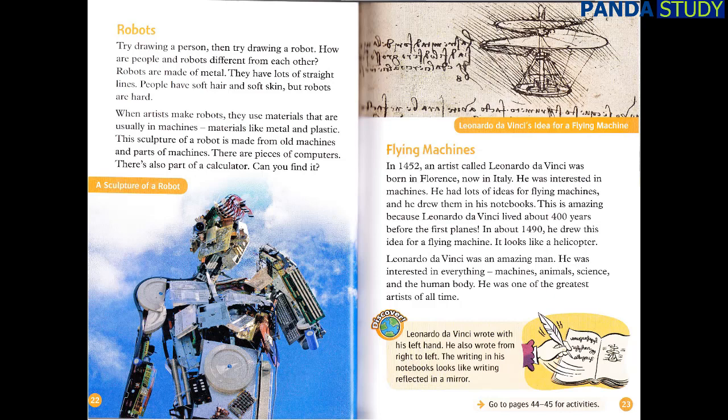Flying Machines. In 1452, an artist called Leonardo da Vinci was born in Florence, now in Italy. He was interested in machines. He had lots of ideas for flying machines, and he drew them in his notebooks. This is amazing because Leonardo da Vinci lived about 400 years before the first planes. In about 1490, he drew this idea for a flying machine. It looks like a helicopter. Leonardo da Vinci was an amazing man. He was interested in everything — machines, animals, science, and the human body. He was one of the greatest artists of all time.